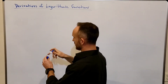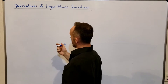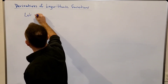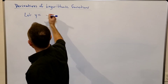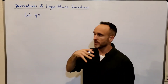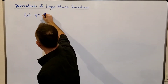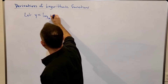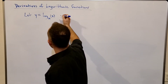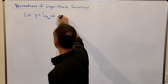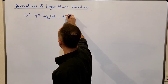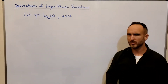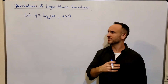The first thing we're going to do is let y equal a generic log function — log base a of x. Here, a is a positive number. We only consider logs with positive bases.